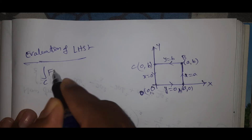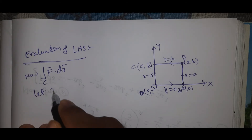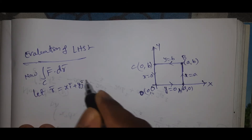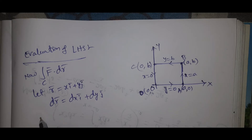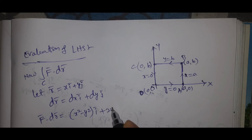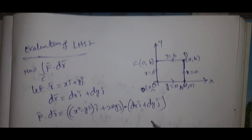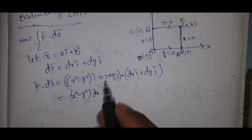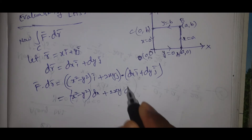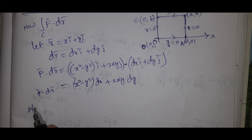Integral over C of F̄ · dr̄. Let r̄ = xī + yj̄, so dr̄ = dx ī + dy j̄. Then F̄ · dr̄ = (x² - y²)ī + 2xyj̄ · (dx ī + dy j̄) = (x² - y²)dx + 2xy dy, since ī·ī = 1 and j̄·j̄ = 1.